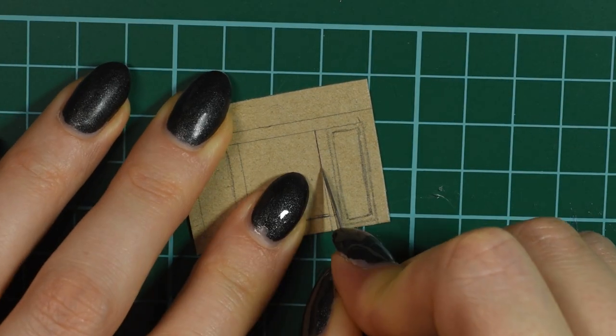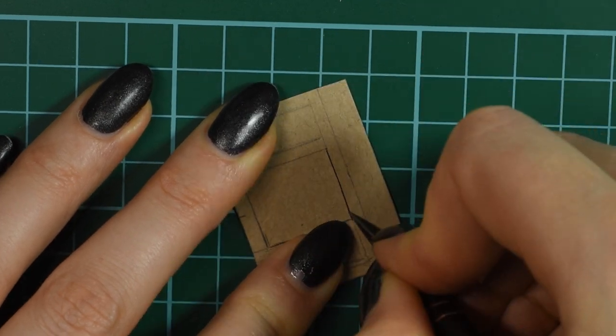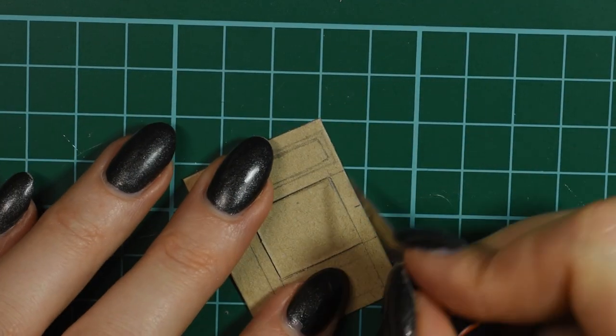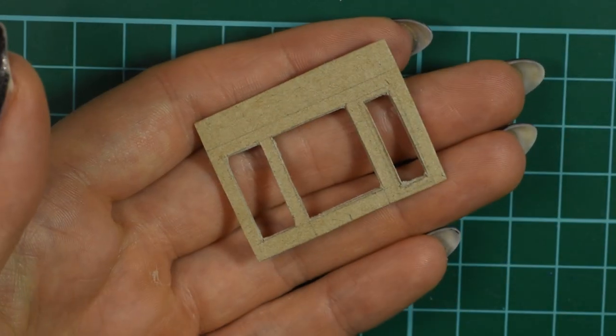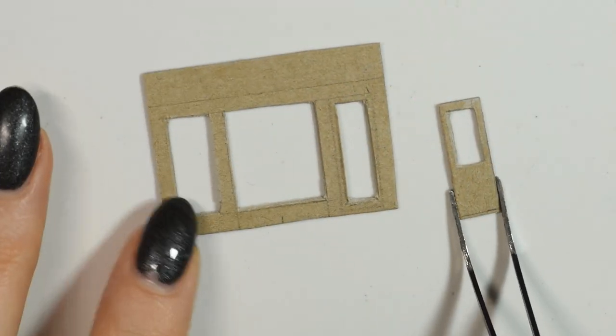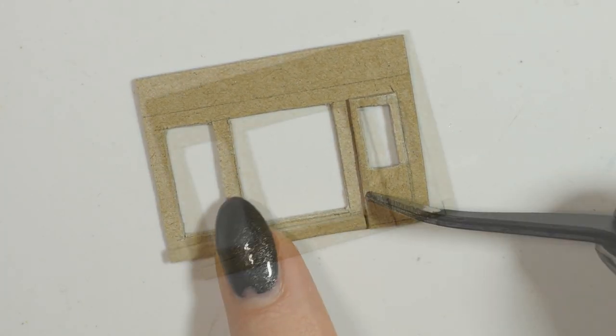On the front piece I sketched on a few windows and a door and then used my exacto knife to cut them out. Then I cut out a piece of cardstock for a door and a few panels and glued these on for a more three-dimensional effect.